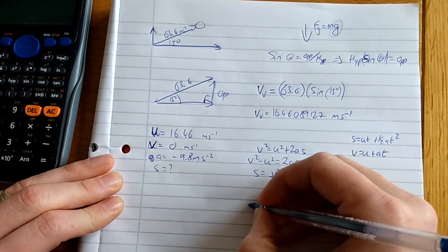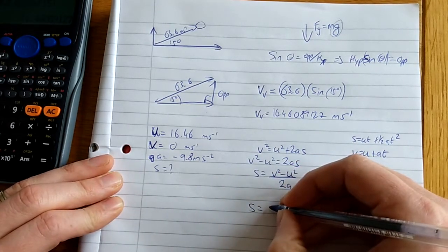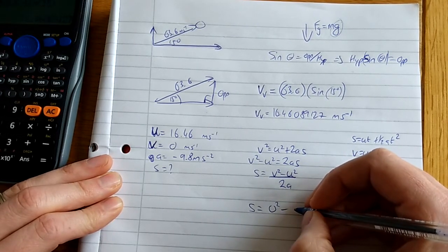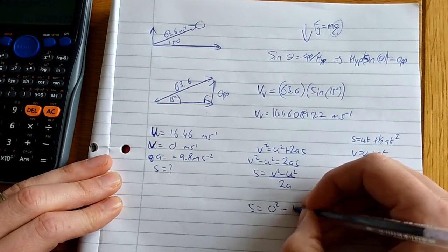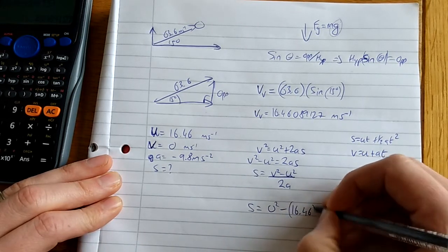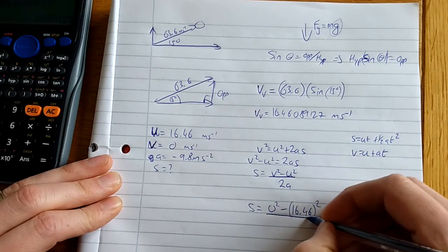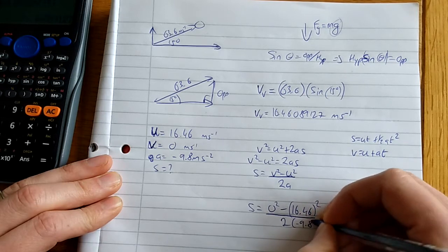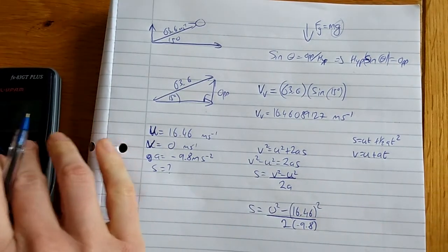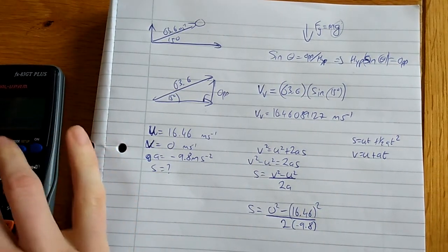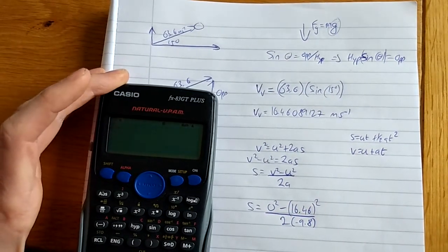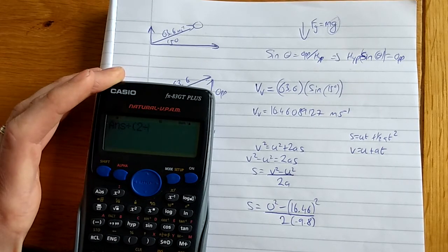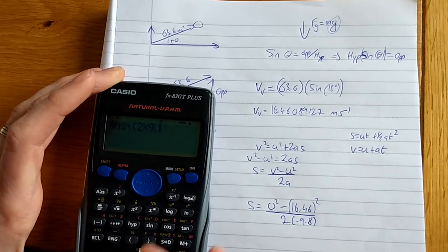s = (0² - 16.46²)/(2 × -9.8). Remember, that's my upward velocity. I don't care about how far it's going horizontally, all I want to know is how far it's going up. So I'm going to square that and divide it by 2 times 9.8.